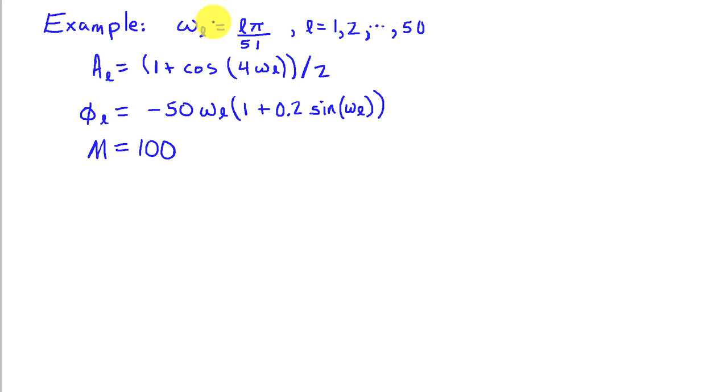Here's an example to illustrate this design strategy. We've chosen frequencies that are spaced by π/51 radians, and we're going to choose 50 of those. I'm going to use M equals 100, so we have 101 degrees of freedom. We're going to have 50 frequencies, so that leads to a total of 100 constraints. We should be able to design a filter that meets an arbitrary response at these frequencies. For illustration purposes, I've chosen the gain of the filter to take the form of (1 + cos(4ω))/2. So this gain is going to oscillate between 1 and 0. And then for phase, we're going to use -50ω_L times a factor of (1 + 0.2 sin(ω_L)).